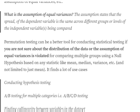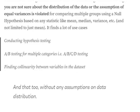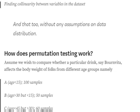Permutation testing can be used for conducting hypothesis testing, A/B testing, and even A/B/C/D testing. It can also help in figuring out collinearity between variables. It has got a lot of use cases, so let's try to understand how permutation testing works.